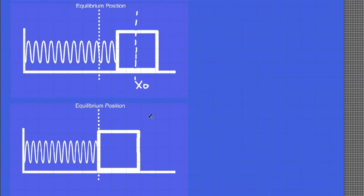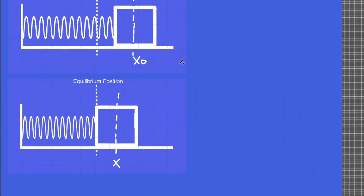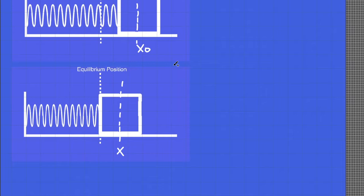And on the third frame, the block has momentarily moved to another position which we label as x. So let me extend these imaginary guides.